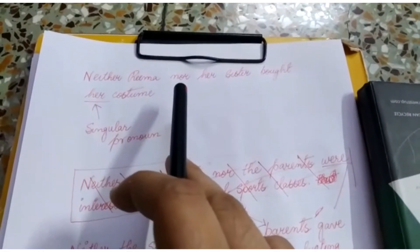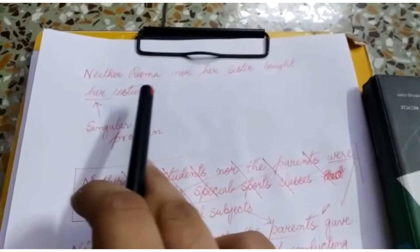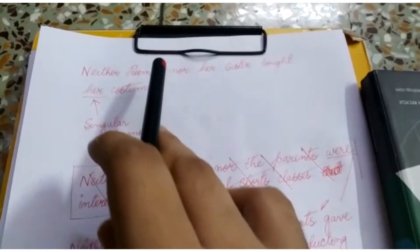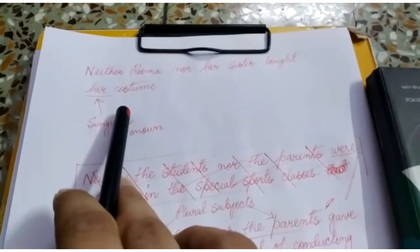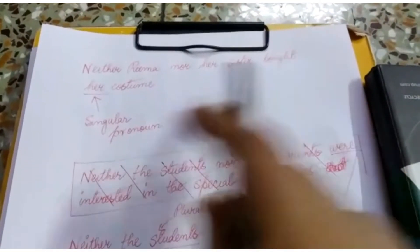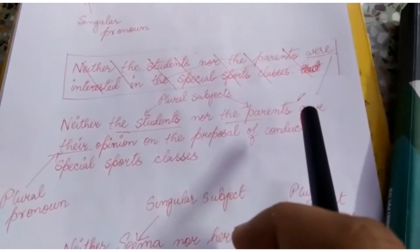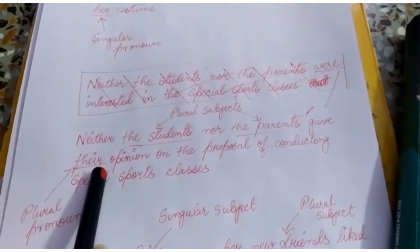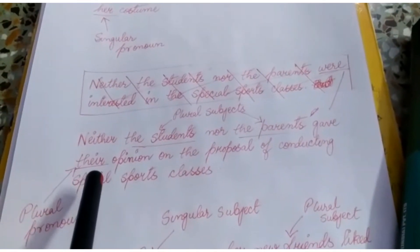Now let us look at the rules of pronouns when a pair of correlative conjunctions is used in a sentence. In 'Neither Rima nor her sister bought her costume,' there are two singular subjects, so the pronoun used is singular — 'her' is a singular pronoun. When there are two singular subjects, the pronoun used will be singular. When there are two plural subjects, the pronoun used will be plural.